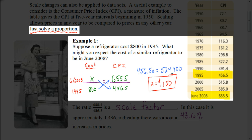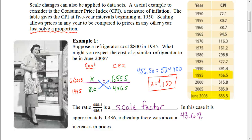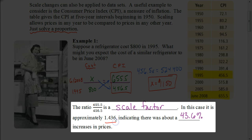I can estimate that that refrigerator, and $800 is a similar one. Granted, there's going to be more technology that might be changed. So, it won't be exactly the same. But a similar refrigerator would cost $1,150 in 2008 versus 1995. If I were to take this 655.5 divided by 456.5, that's going to end up giving me my scale factor. When you do that, you end up getting 1.436.